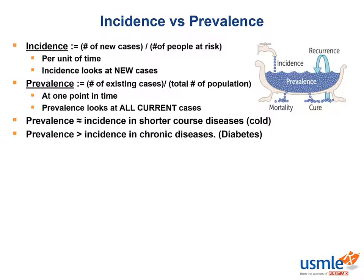Roughly speaking, prevalence is approximately equal to incidence times the disease duration. Thus, for acute diseases like the common cold, prevalence is approximately equal to incidence because almost all cases are new cases. For chronic diseases like diabetes, the prevalence will be greater than the incidence because there are a large number of existing cases.